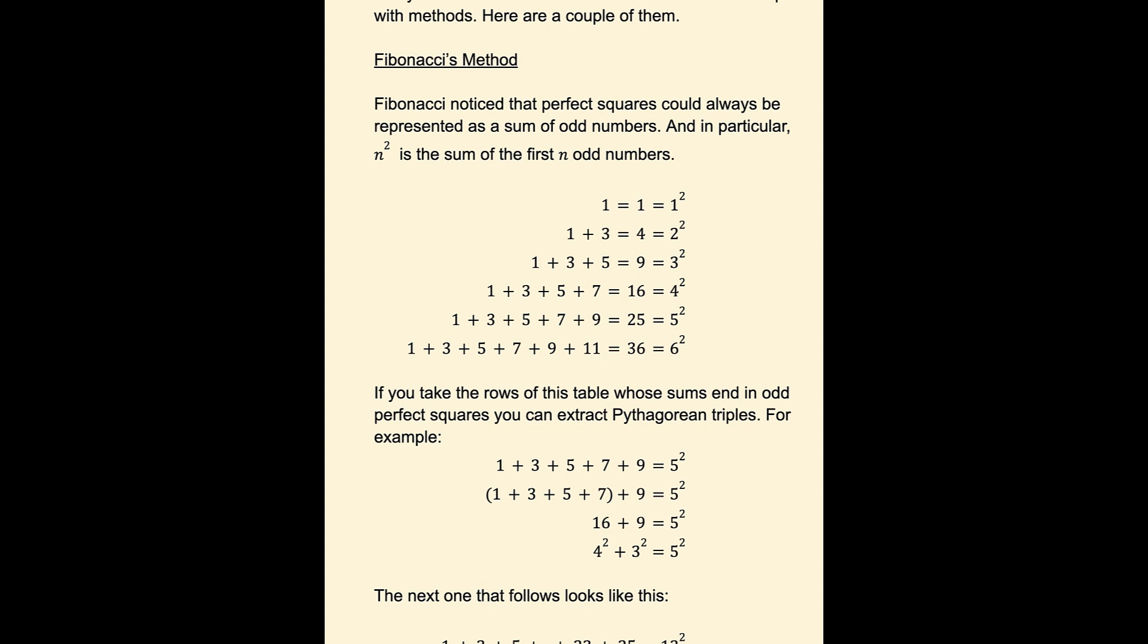If you take the rows of this table, whose sums end in odd perfect squares, then you get a Pythagorean triple. So for example, the row ending with 9, 1 plus 3 plus 5 plus 7 plus 9, can be broken into two parts.